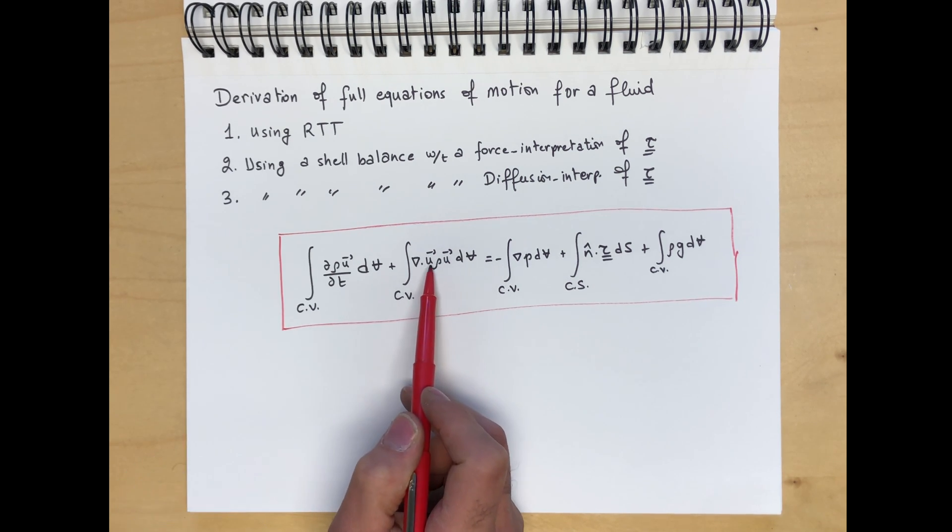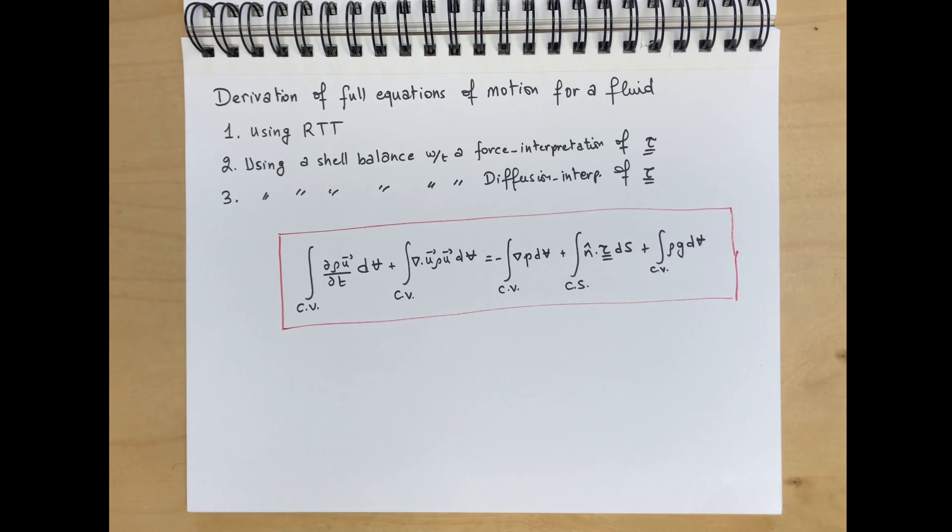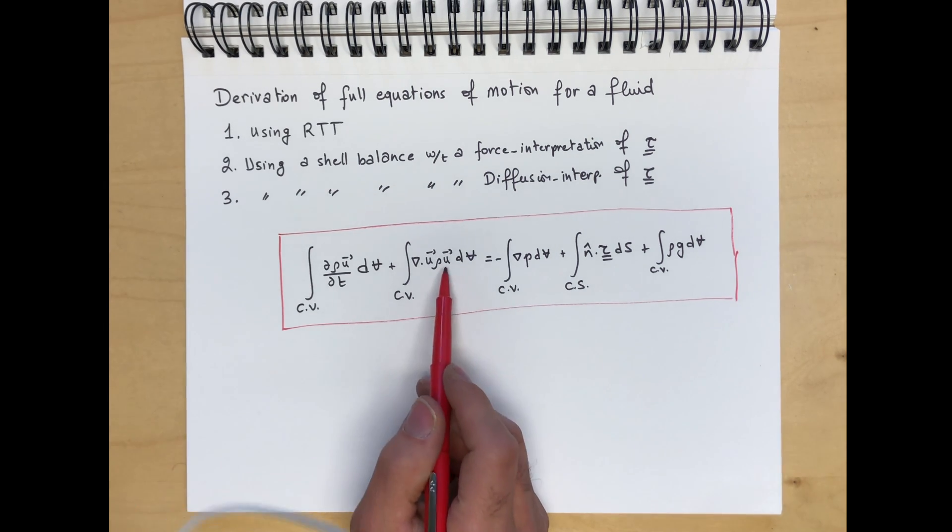So if you write it in this form, this is preferable in my opinion, although in the end the quantities are symmetric. So u rho v is equal to v rho u. But if you think of momentum as its own quantity, this is a more rigorous approach in my opinion.